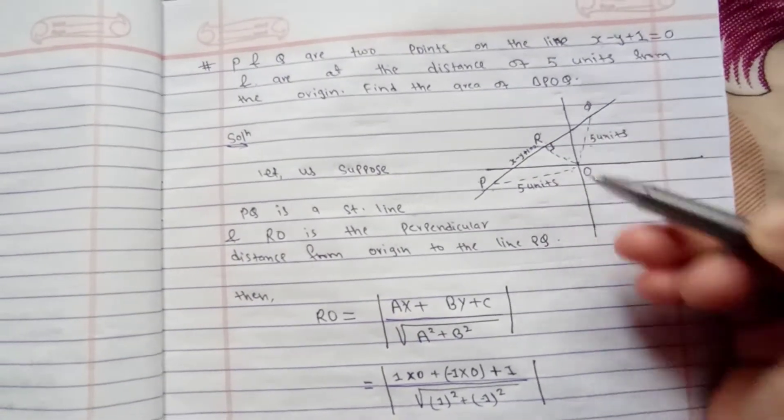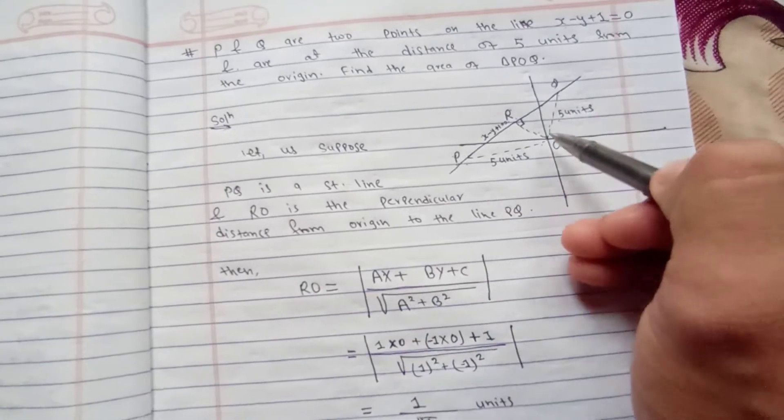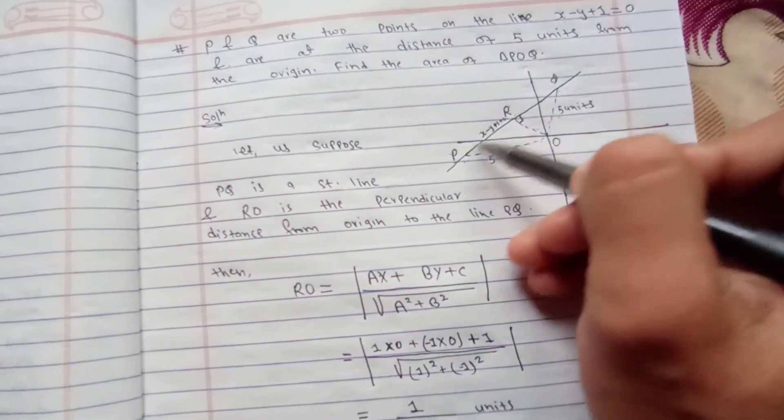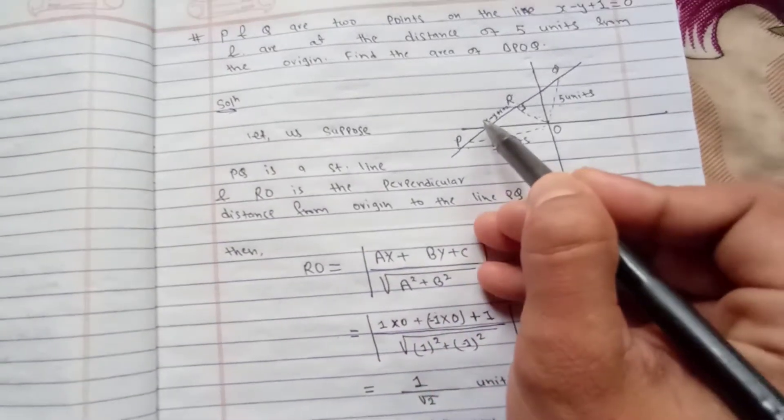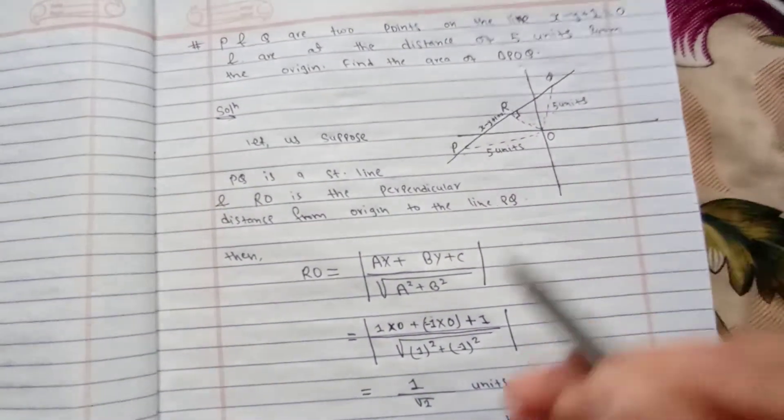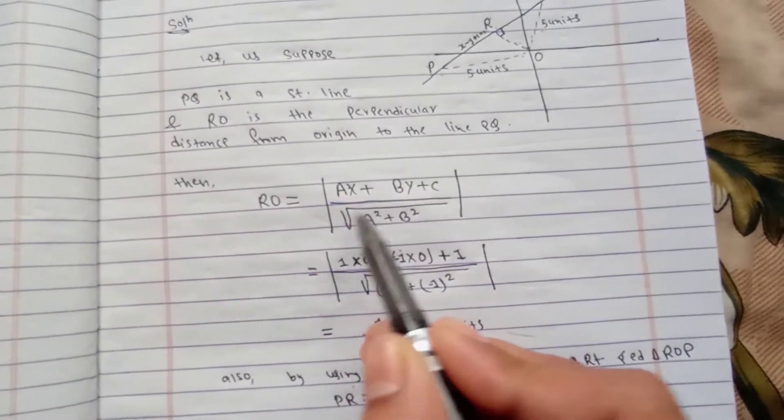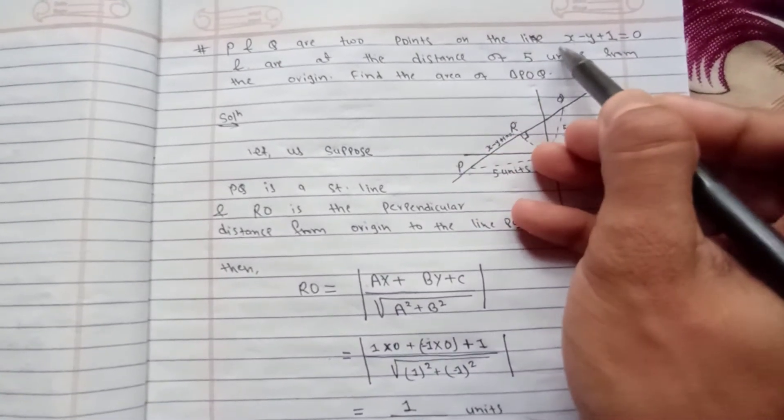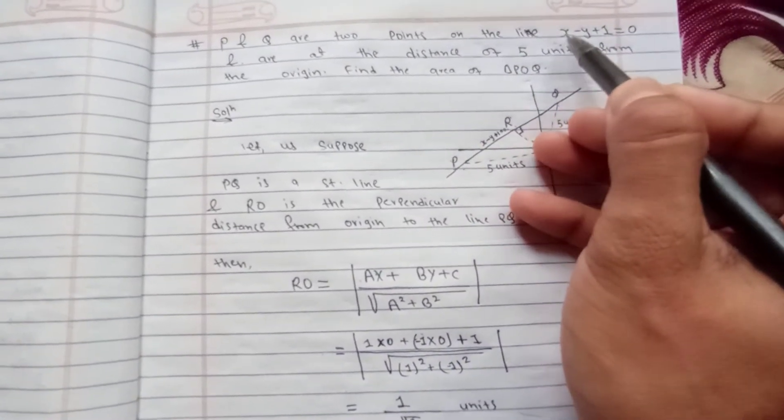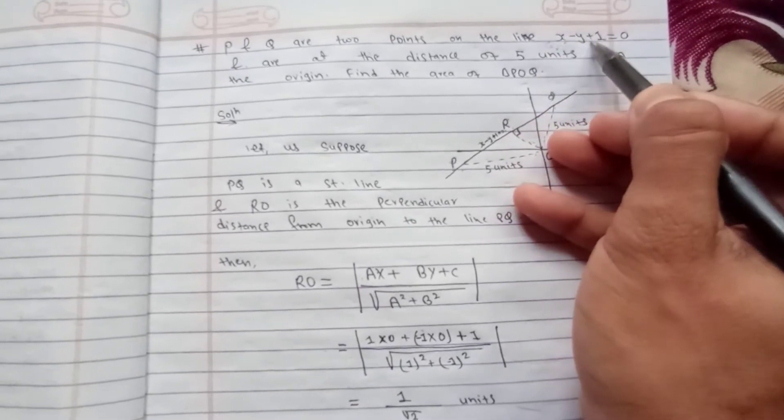We can calculate this perpendicular distance from the origin to the straight line using the formula. Comparing x minus y plus 1 equals to 0 with ax plus by plus c equation, we get a is 1, b is minus 1, and c is 1.